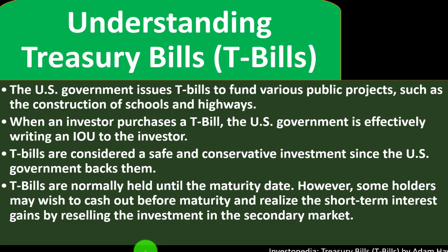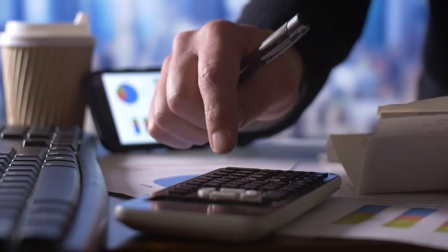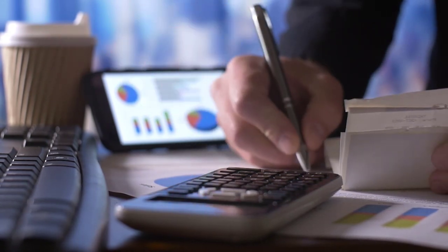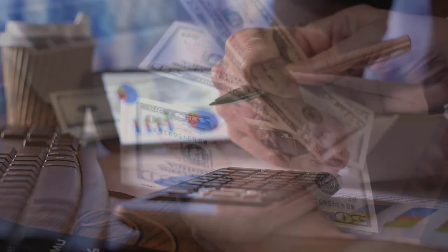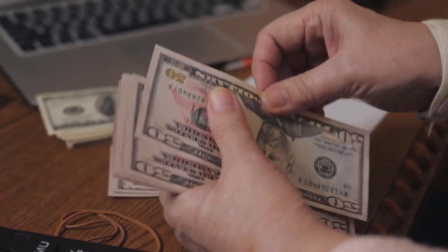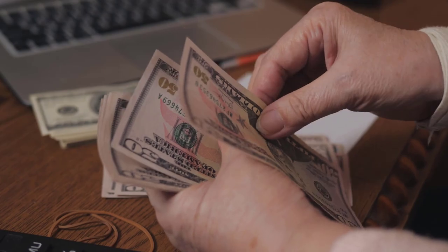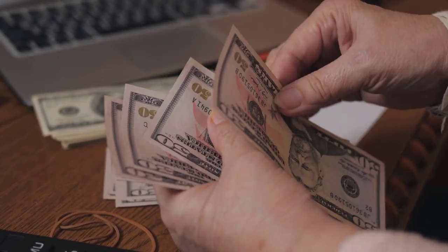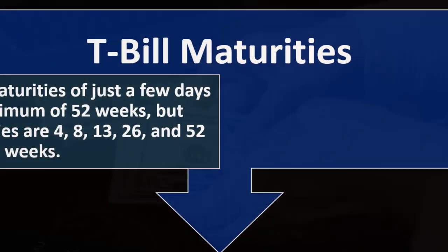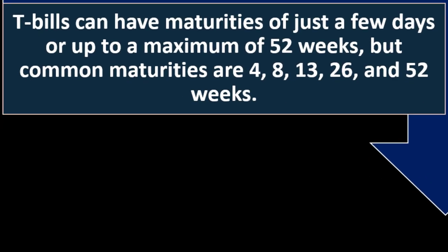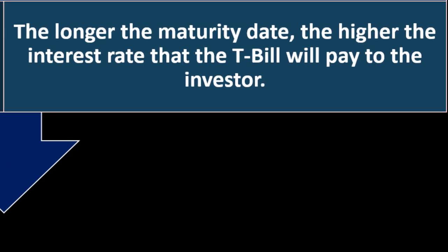You could, just like with other kinds of bonds, sell the bill on the secondary market. The primary market is buying it from the issuer — in this case, the U.S. government. The secondary market is buying or selling not from the issuer but to some other investor. T-bills can have maturities of just a few days or up to a maximum of 52 weeks. Common maturities are 4, 8, 13, 26, and 52 weeks. The longer the maturity date, the higher the interest rate the T-bill will pay to the investor.